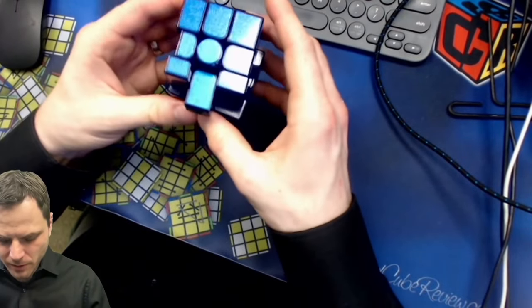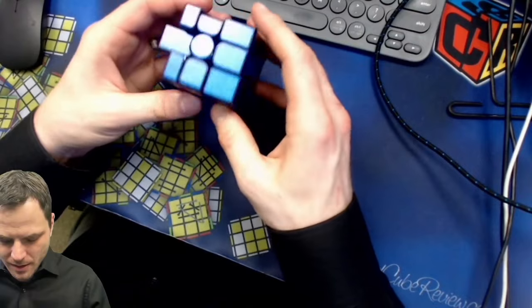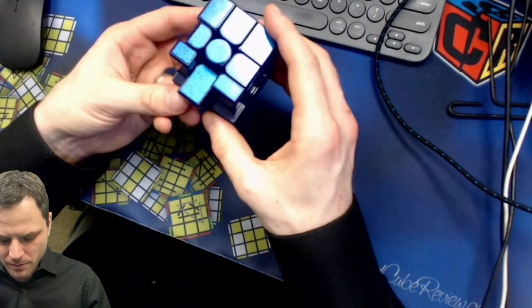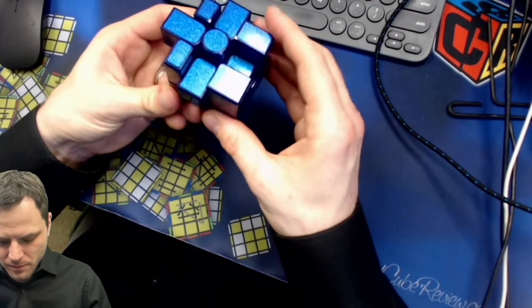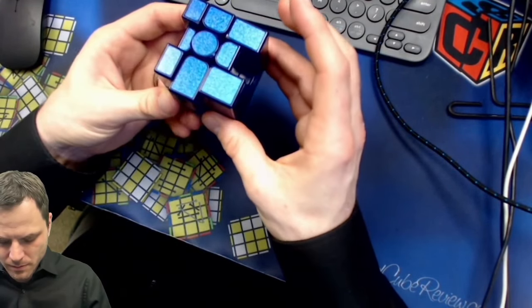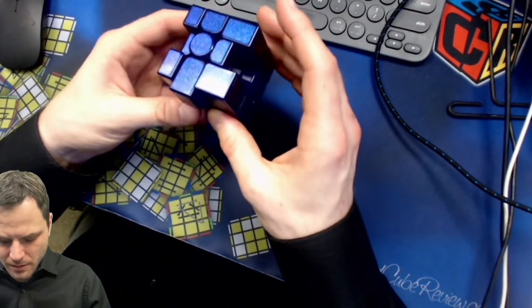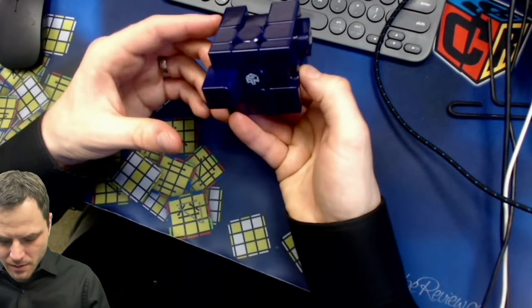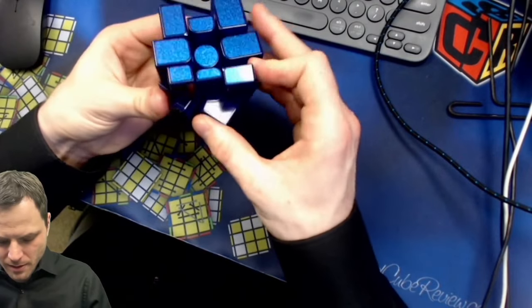So corners are done, I need LR edges, so that one. All right, I need to flip two so I need to do, is that right? I think I did it right. LR edges.